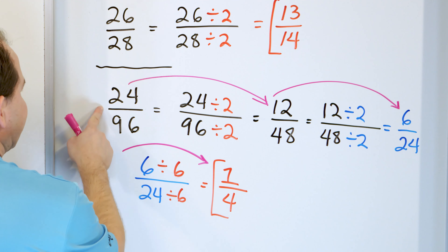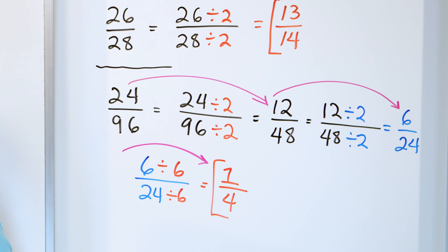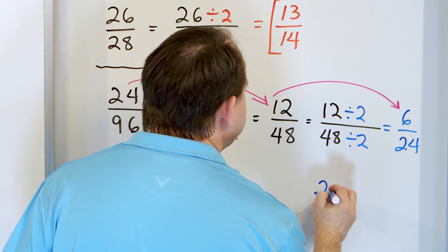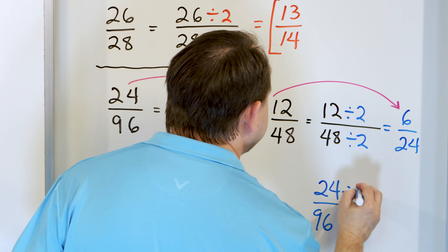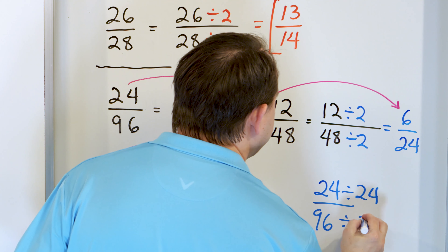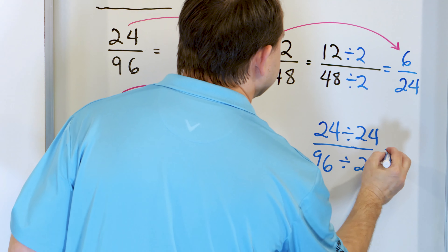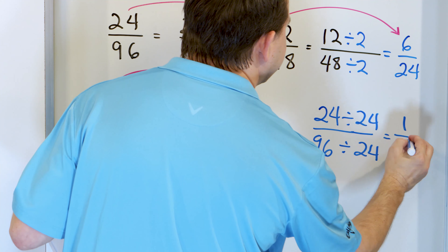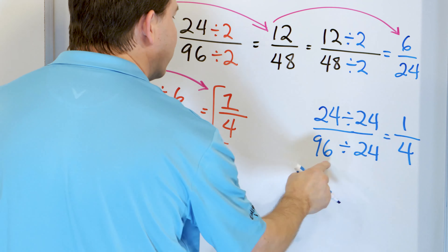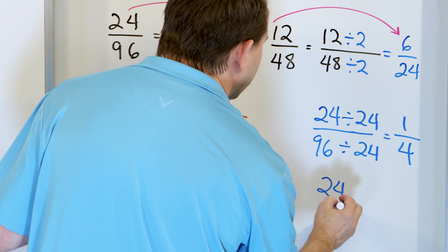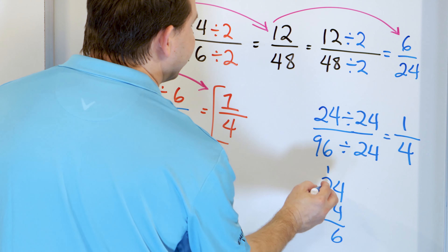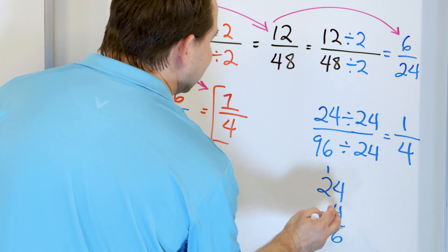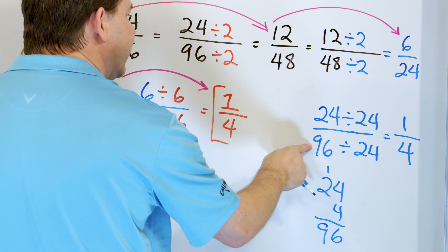I think I could actually divide the top and bottom by twenty-four. Twenty-four divided by twenty-four is one, and ninety-six divided by twenty-four is four, because four times twenty-four is ninety-six. Let's check: twenty-four times four — four times four is sixteen, carry the one; two times four is eight plus one is nine — so four times twenty-four is ninety-six. That confirms it.